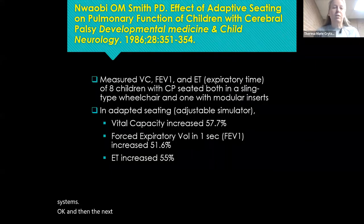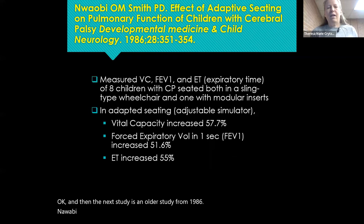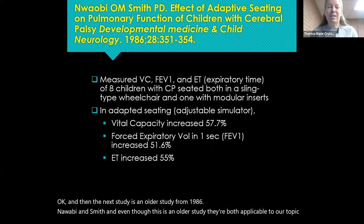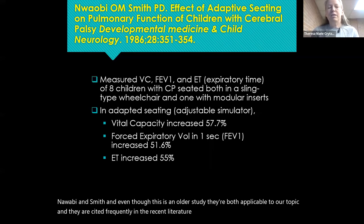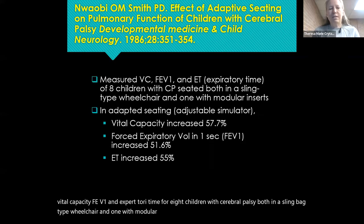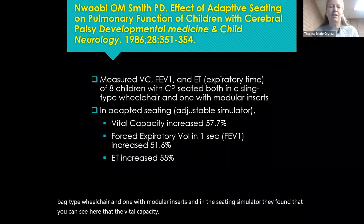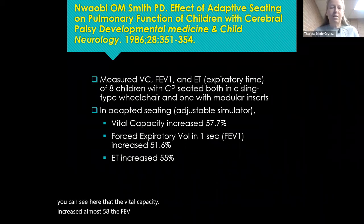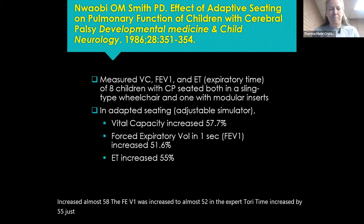The second study, by Nwabi and Smith from 1986, is an older but frequently cited study. They measured vital capacity, FEV1, and expiratory time in eight children with cerebral palsy — comparing a sling-back wheelchair to one with modular inserts in a seating simulator. Vital capacity increased almost 58%, FEV1 increased almost 52%, and expiratory time increased by 55% — just from changing the seating components.